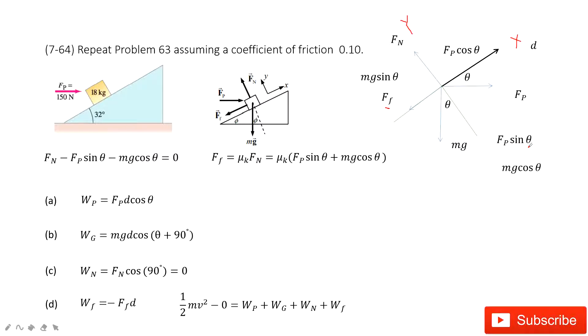Then we need to find the friction. First thing, we look at the y-component. At y-component, the net force is zero because the object never moves along the y-component; it is stationary in the y-component. So Fn minus Fp sine theta minus mg cosine theta equals zero. In this case, we can find Fn. And very easily, we can find the friction is the coefficient mu k times Fn. After we input Fn inside, we get it.